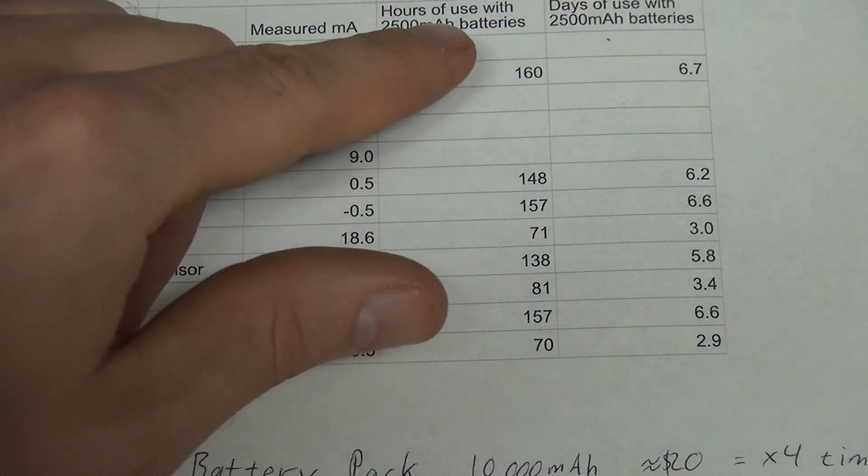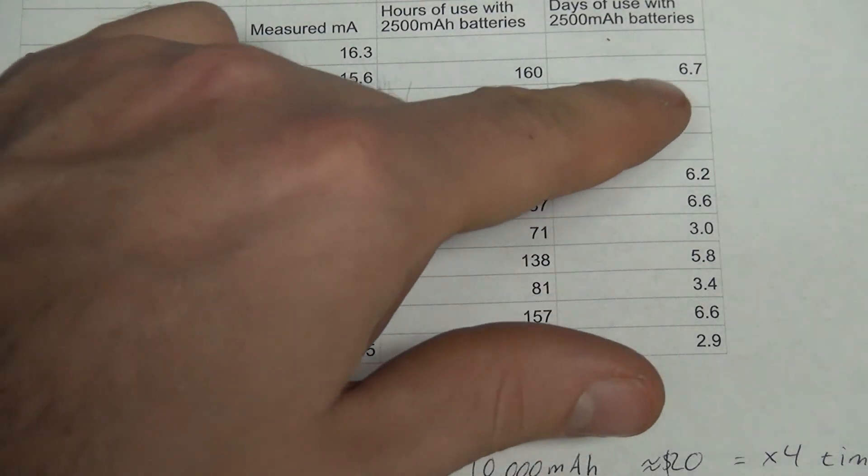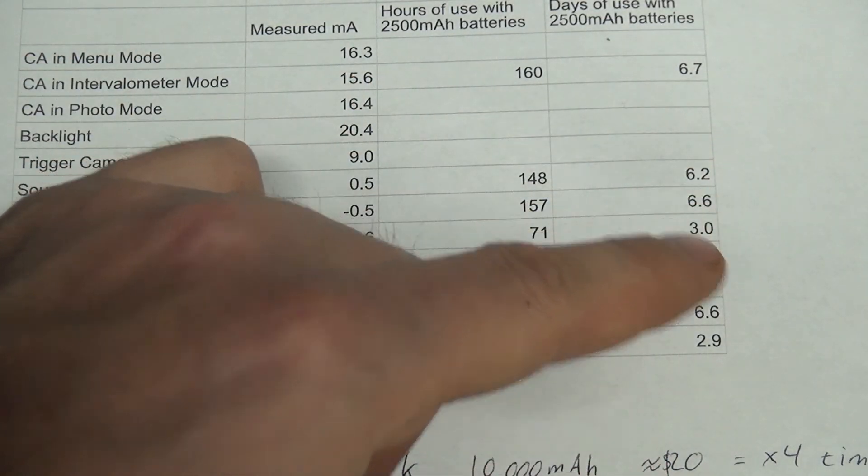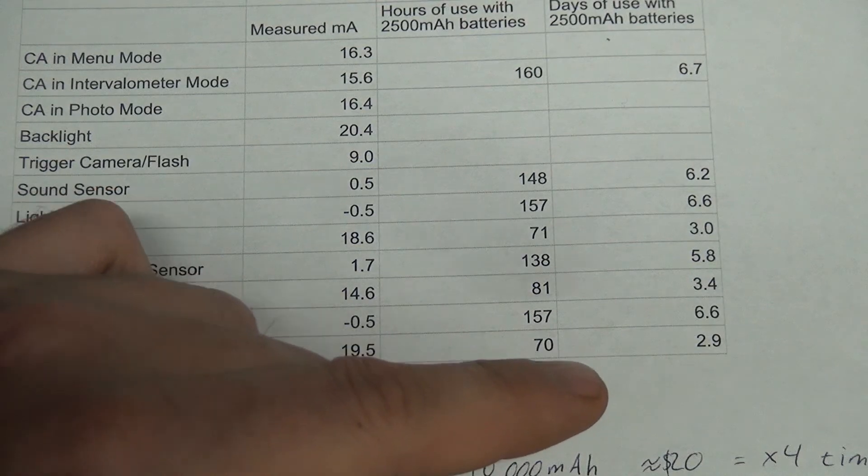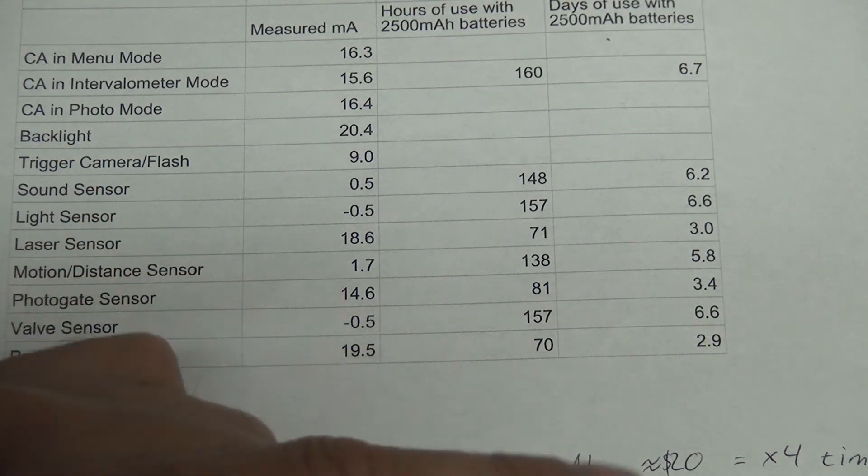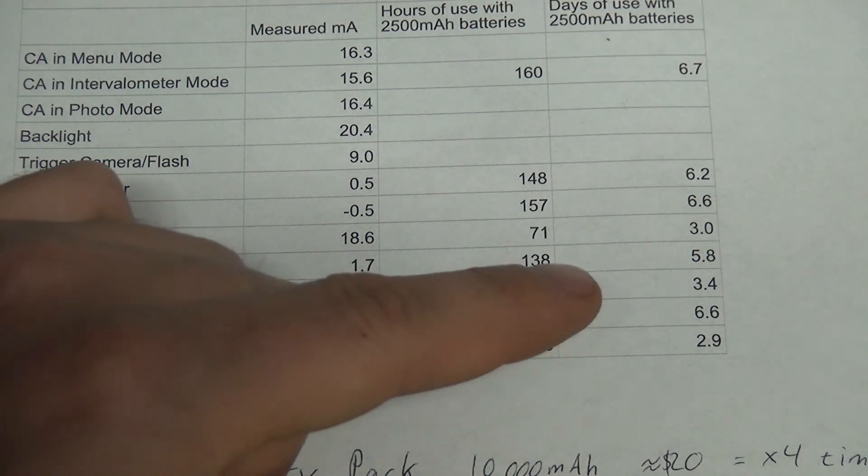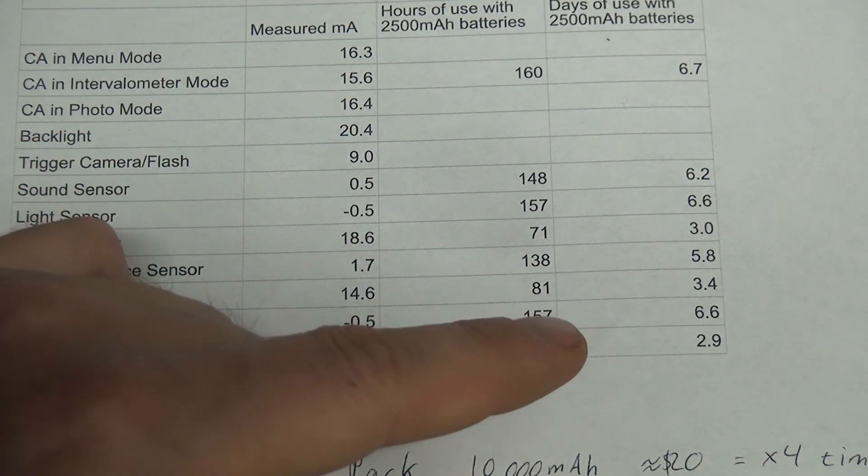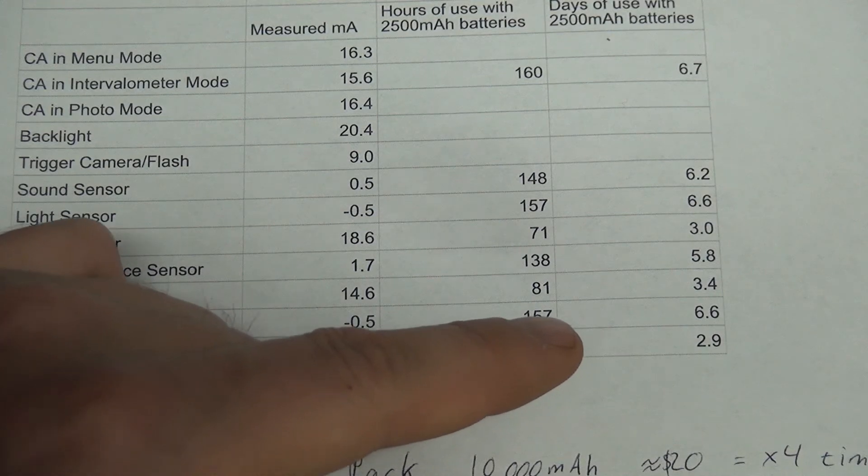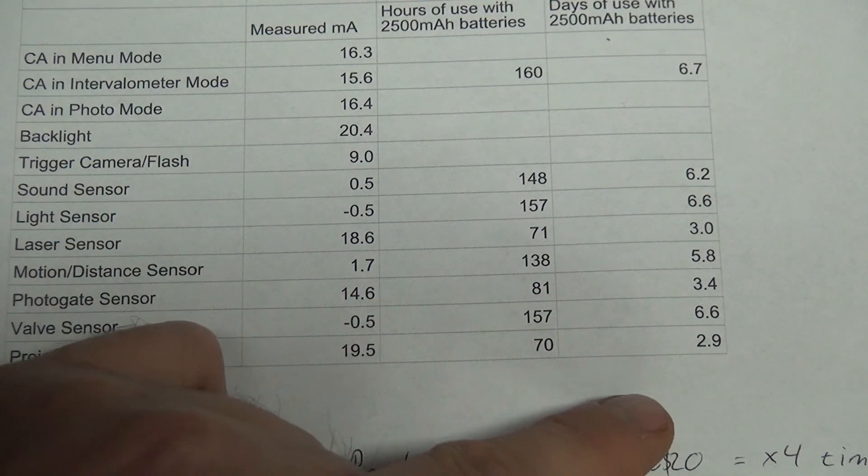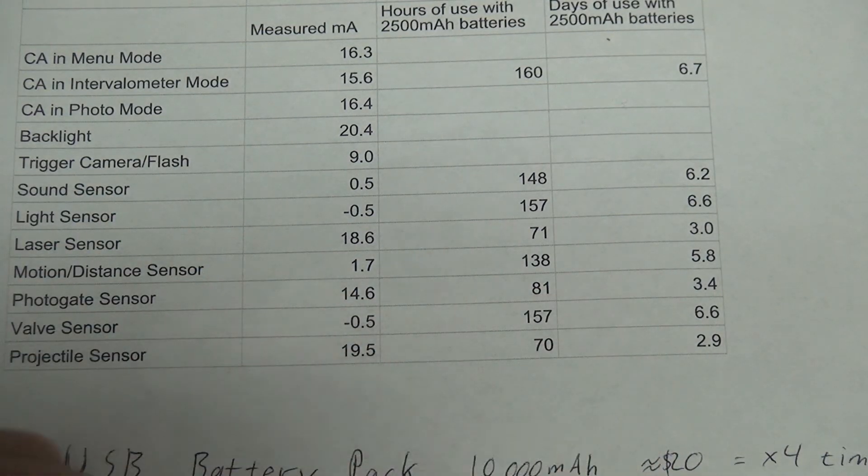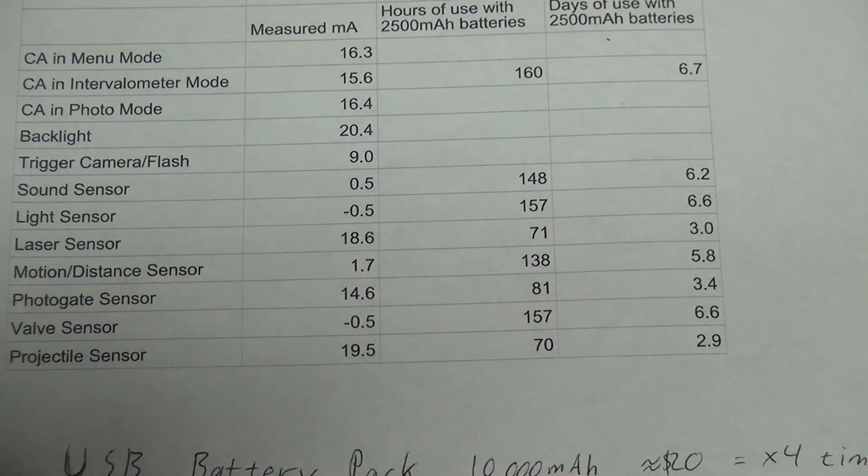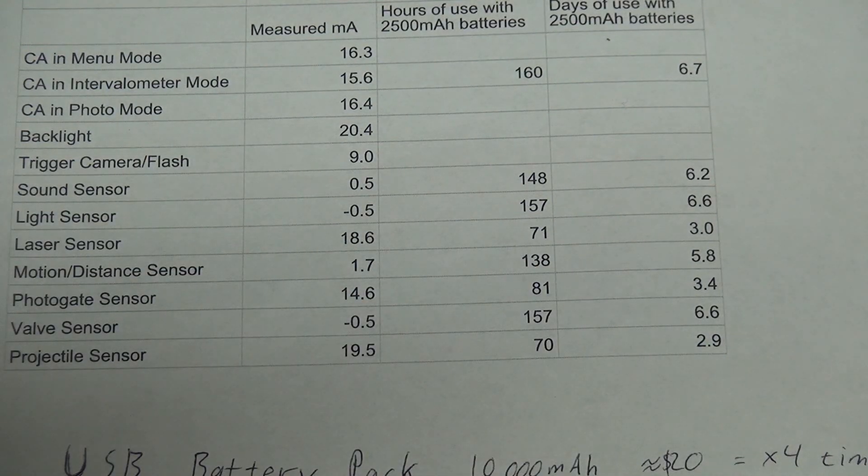Over in this column, you can see the hours of use. Then I've got the days of use with your standard AA batteries. It ranges from over six days of use to right around three days of use. You're never going to be using the projectile sensor for that long anyways. That's a briefly used sensor. Really, it's this laser one that I would pay more attention to.